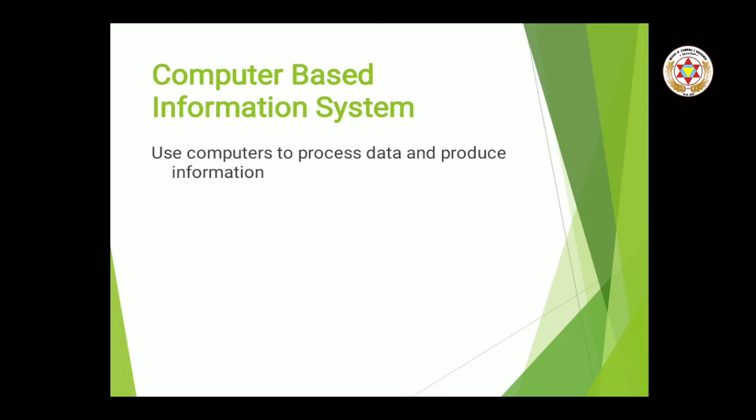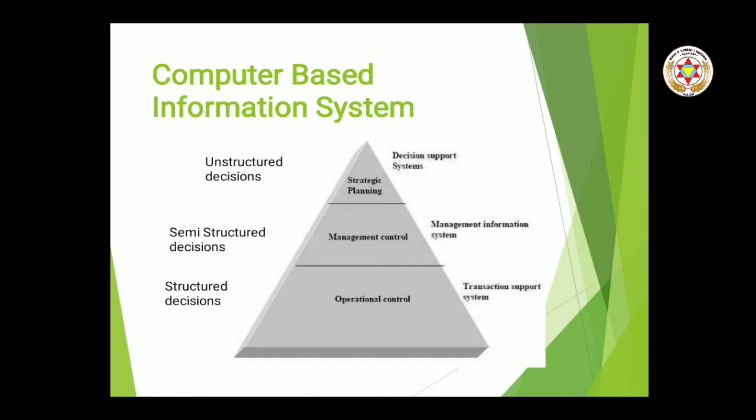Next we have computer-based information system. Computer-based information system mein hum computer ka use karte hain data ko process karne ke liye, output generate karne ke liye, information generate karne ke liye. Is ke types padhne se pehle, we should know ki kisi bhi organization mein log kaise kaam karte hain — what hierarchy hoti hai. In any organization we have different hierarchies.